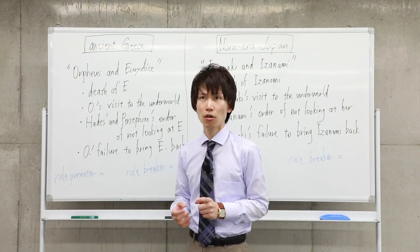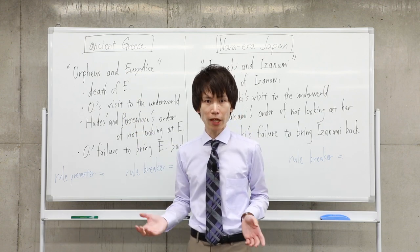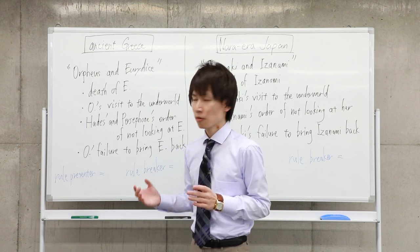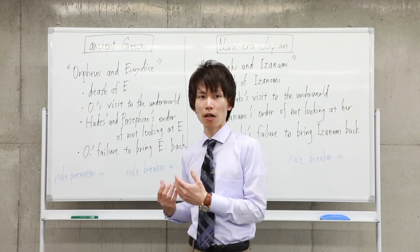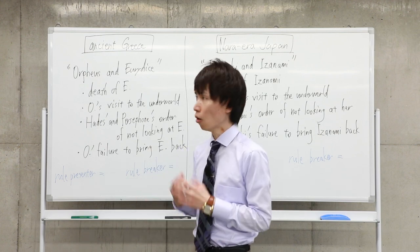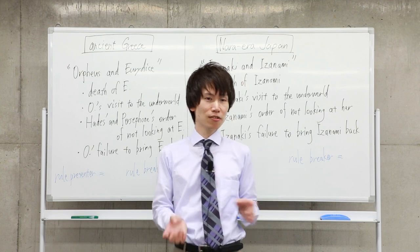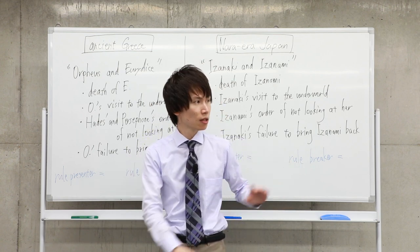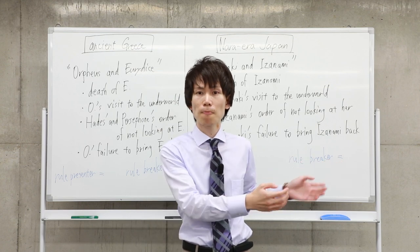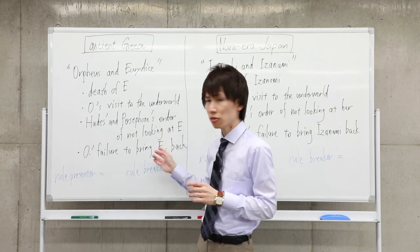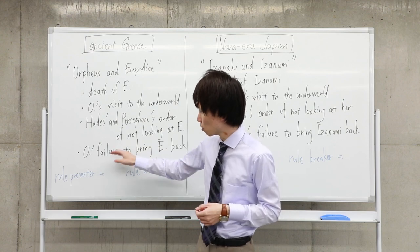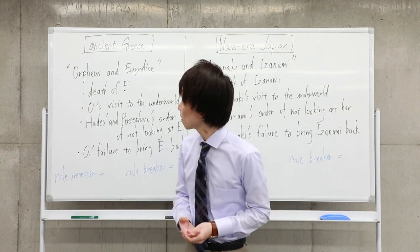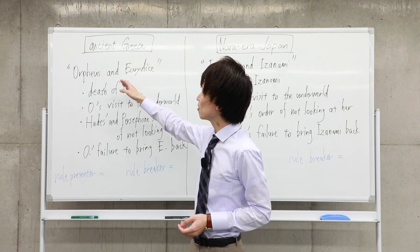But on the way, he becomes very anxious. He wonders if Eurydice is really keeping up with him. And then Orpheus looks back and he recognizes the existence of his wife Eurydice. But at that very moment, Eurydice fades into the distance. Because of Orpheus's failure, because of Orpheus's deed, he loses his wife forever. This is the story from ancient Greece.